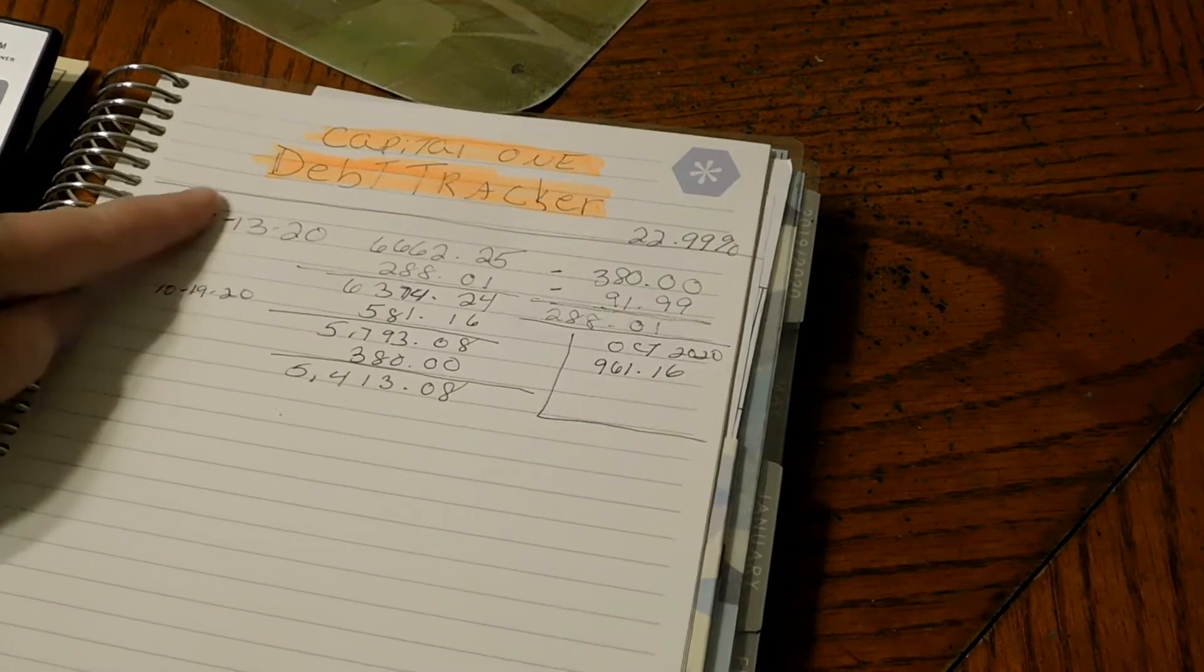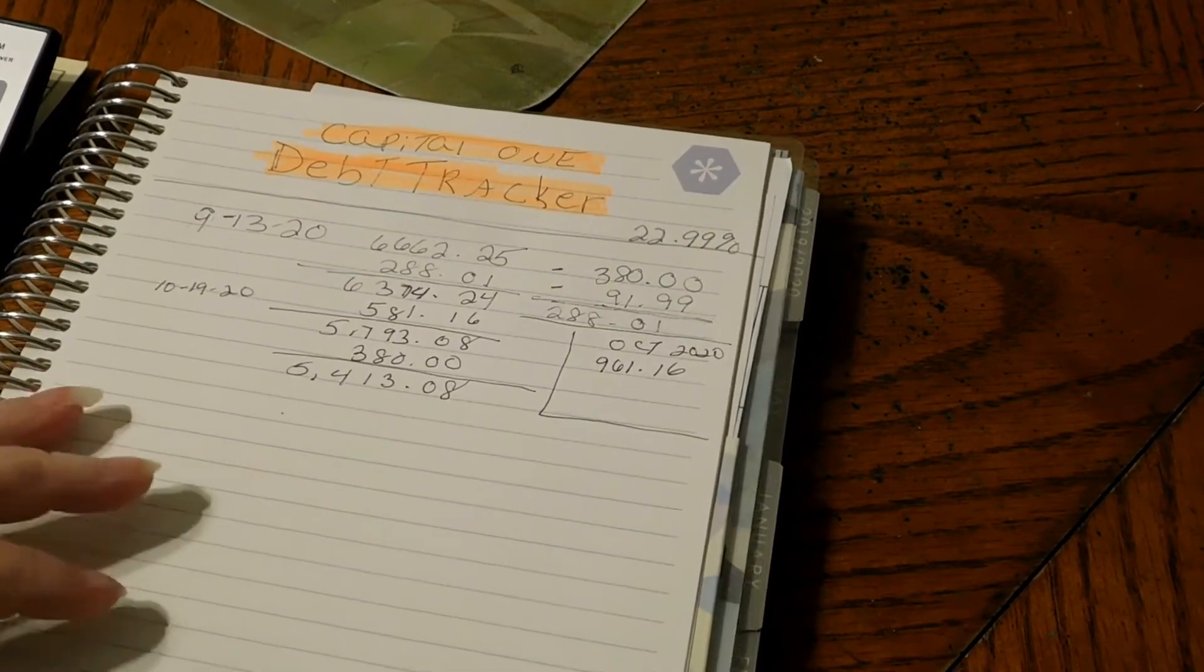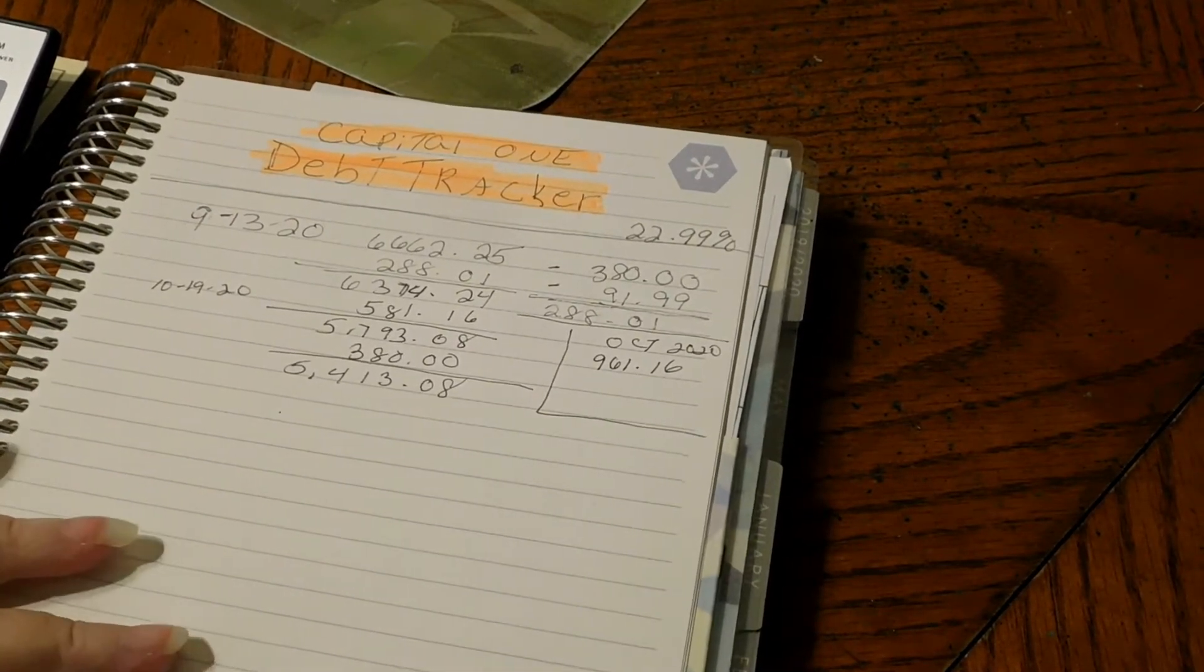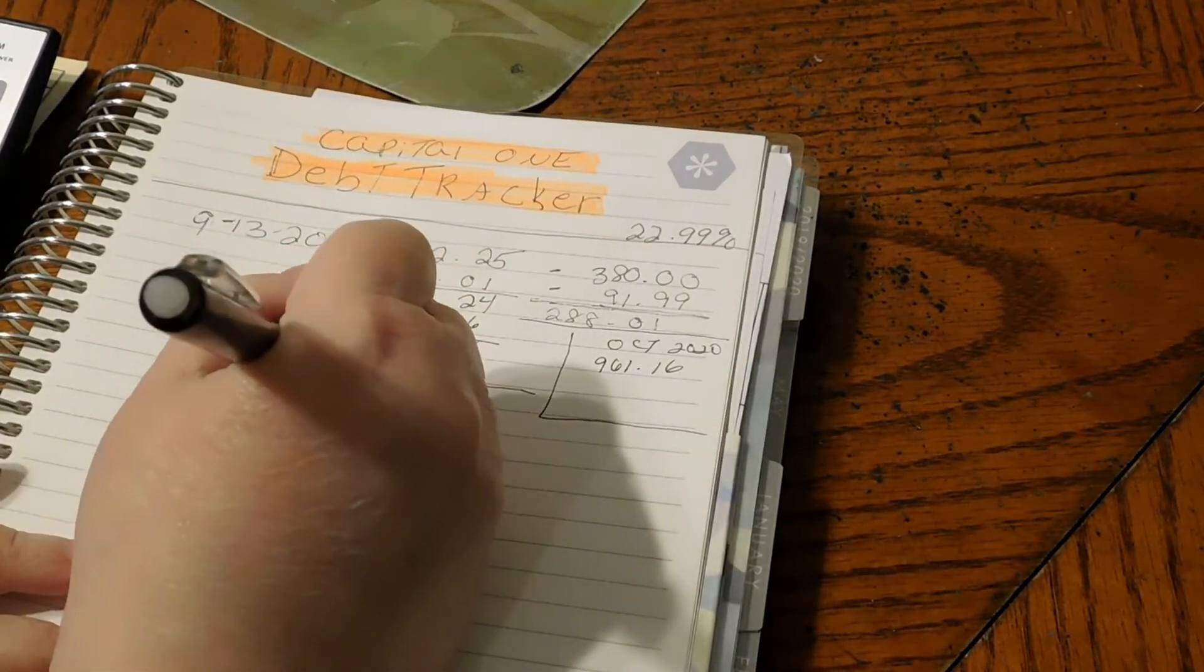So between September, $288.01, plus $961.16, we've already paid back in two months $1,249.17, which is not bad.